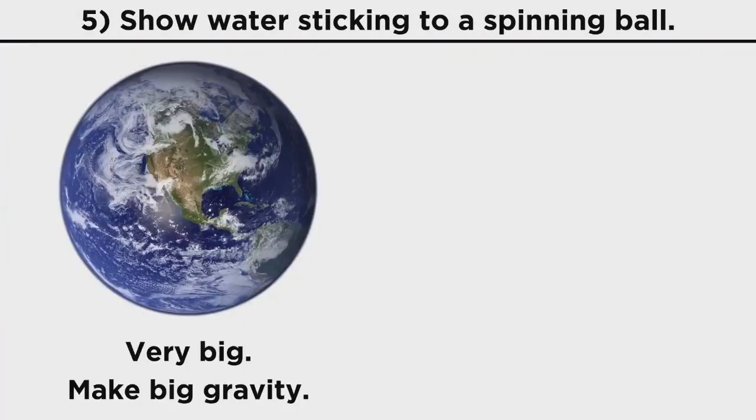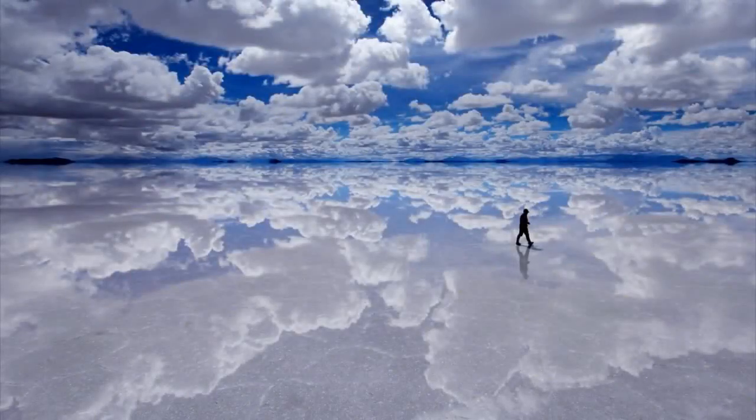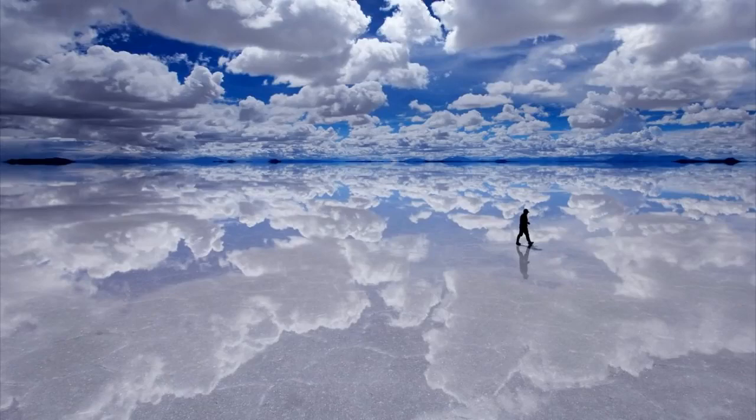The Earth is huge. It generates an enormous gravitational field. That's why everything sticks to it. A ball is very tiny. It does not generate an enormous gravitational field, so things don't stick to it. So again, just like your last point, you cannot demonstrate water curving around and sticking to a ball, but wish to claim it only happens on a scale too large for you to recreate.